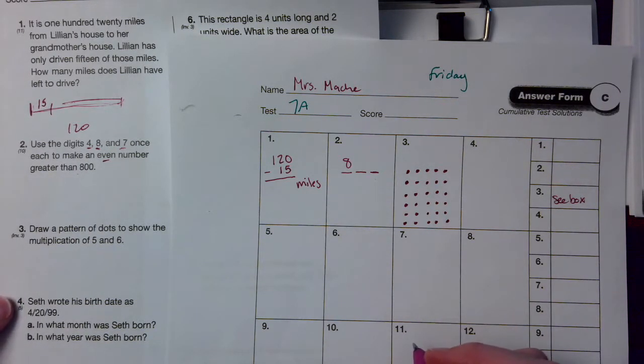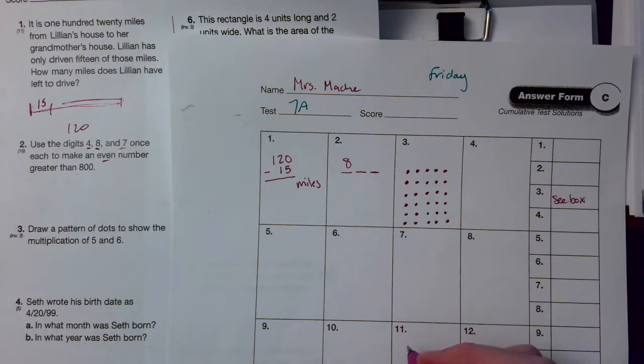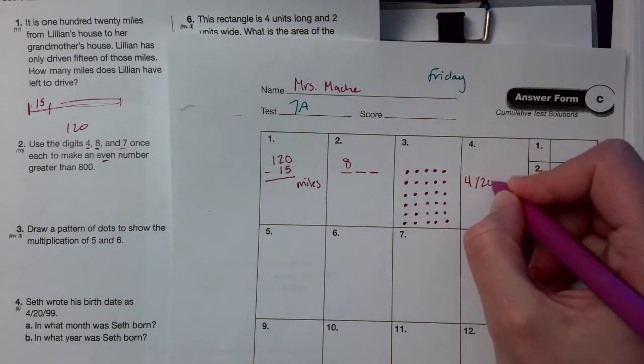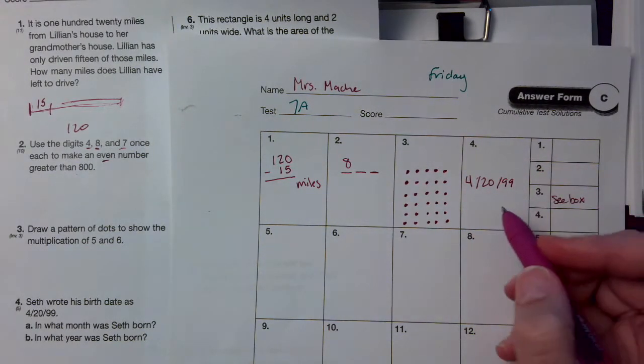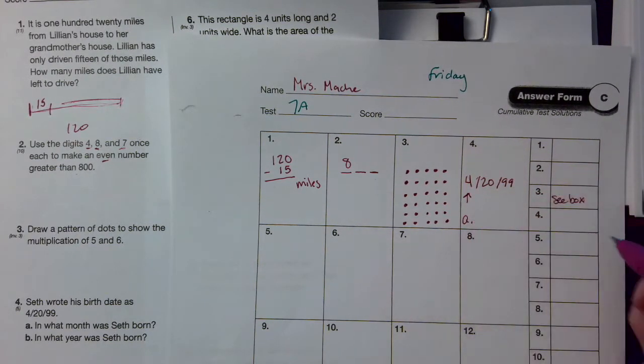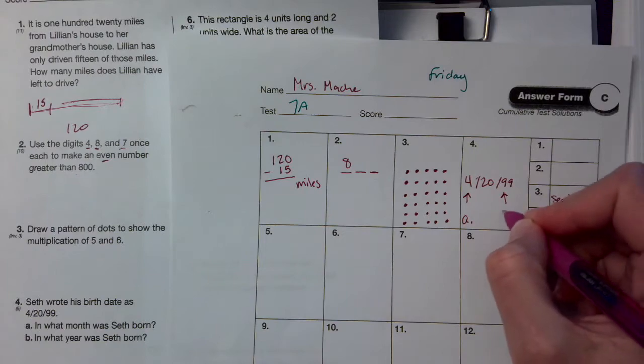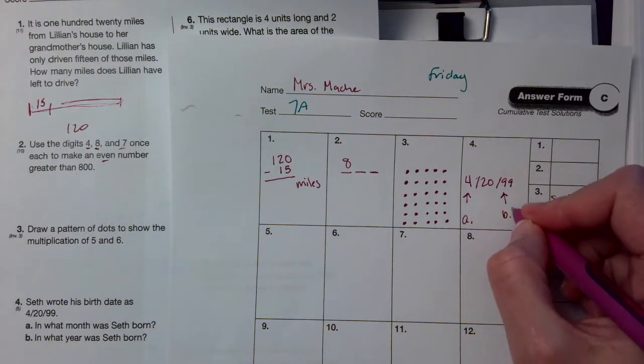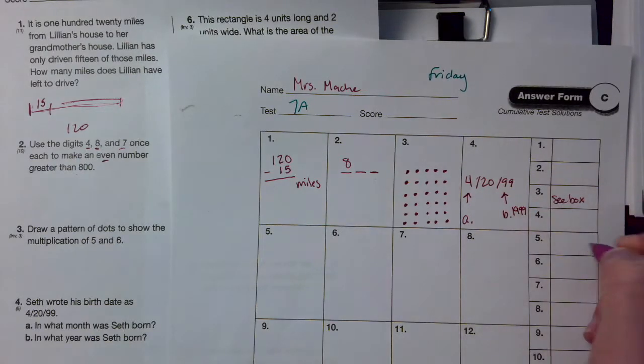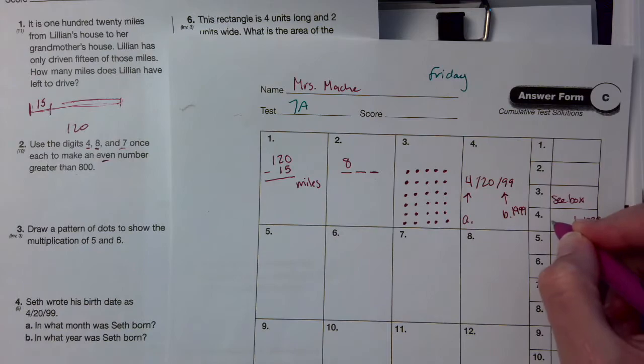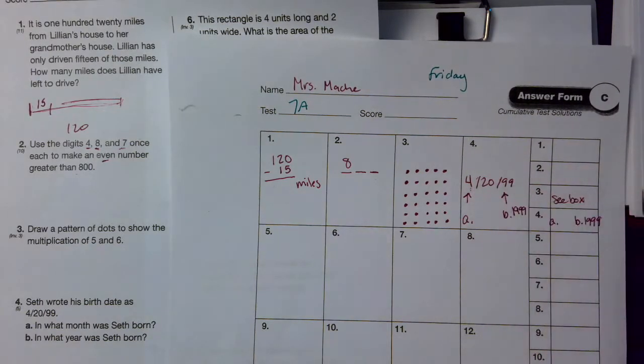Number 4. Seth wrote his birth date as 4, 20, 99. What month was Seth born in? That's A. And what year? That's B. Remember the year, if it's 99 like that, it's really 1999. So for B, you'd write 1999. For A, what is the 4th month of the year?